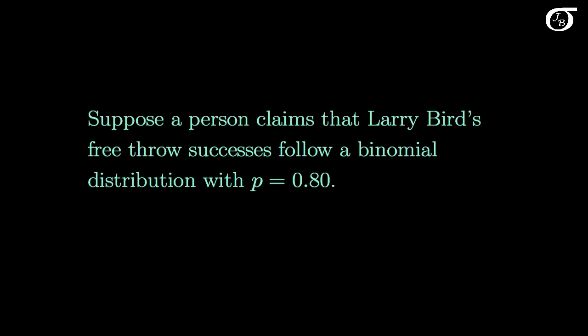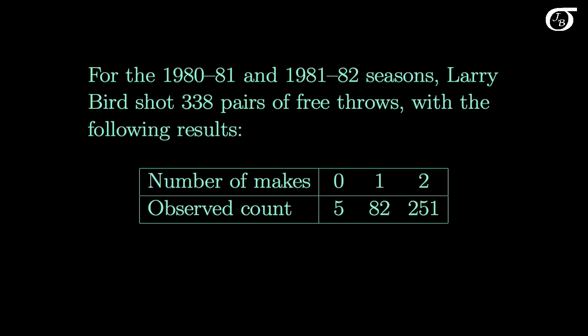Let's look at an example to start. Suppose a person claims that the great NBA Hall of Famer Larry Bird's free throw successes follow a binomial distribution with a probability of success of 0.8. What does the observed data tell us about this claim? Let's restrict ourselves to the 1980-81 and 1981-82 seasons. In these two seasons, Larry Bird shot 338 pairs of free throws with the following results.